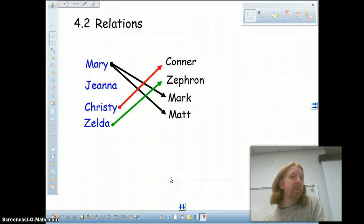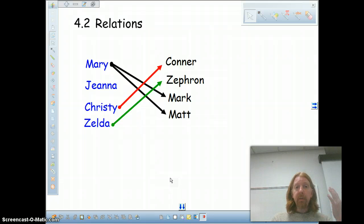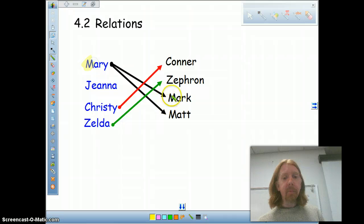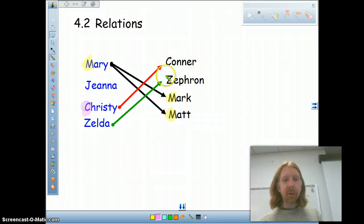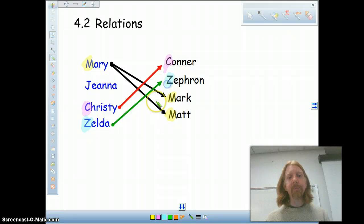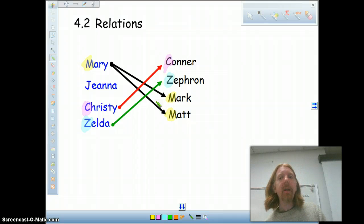Now, when we talk about relations, we're talking about what's happening as I draw those arrows. What rule am I following? Now, what's nice about this example to open with, the rule isn't that hard to figure out. In this case, we might argue that the relation is that we're going to pair girl names in blue with boy names in black based on the first letter of the name. So Mary gets paired with Mark and with Matt. Christy gets paired with Connor. And Zelda gets paired with Zephron. So we're drawing from one group into the other.